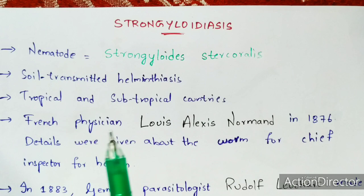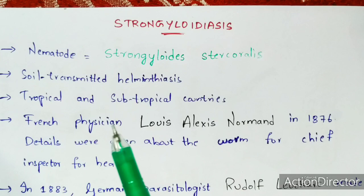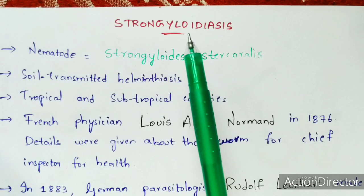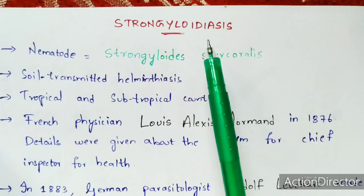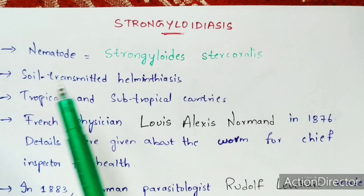In this video, I'm going to explain about Strongyloidiasis — the symptoms, treatment, and life cycle. The causative agent is a parasite known as Strongyloides stercoralis, a parasitic nematode. This disease is called soil-transmitted helminthiasis because S. stercoralis belongs to the helminthiasis group and is transmitted through soil.